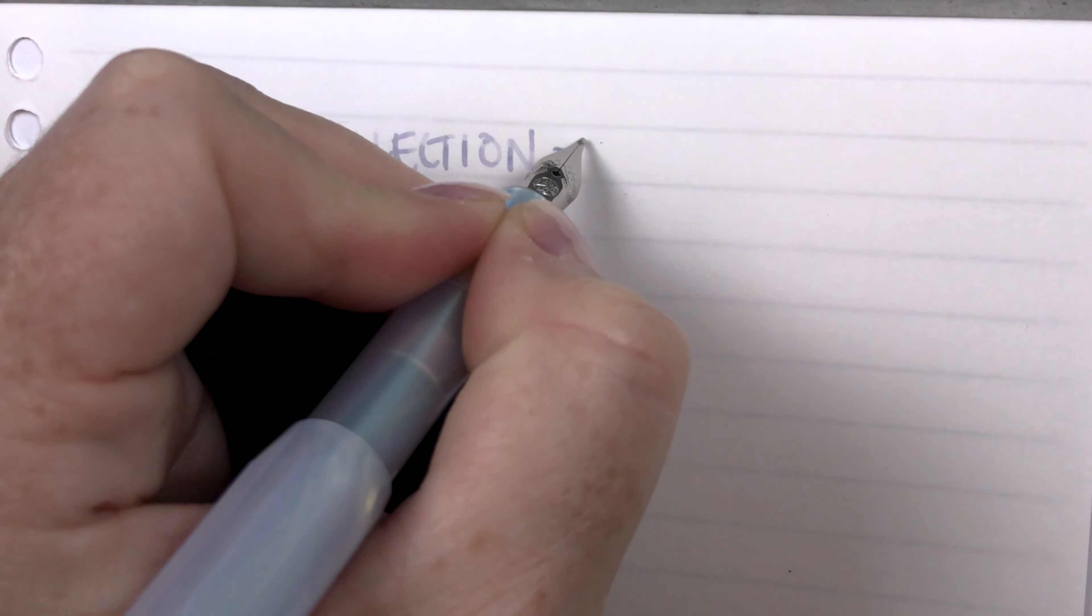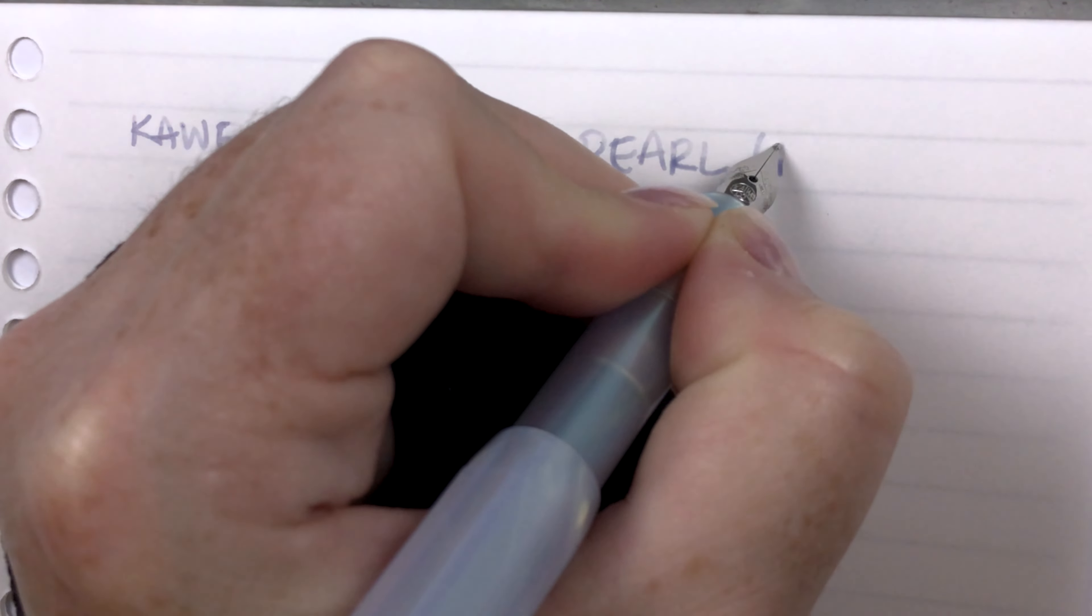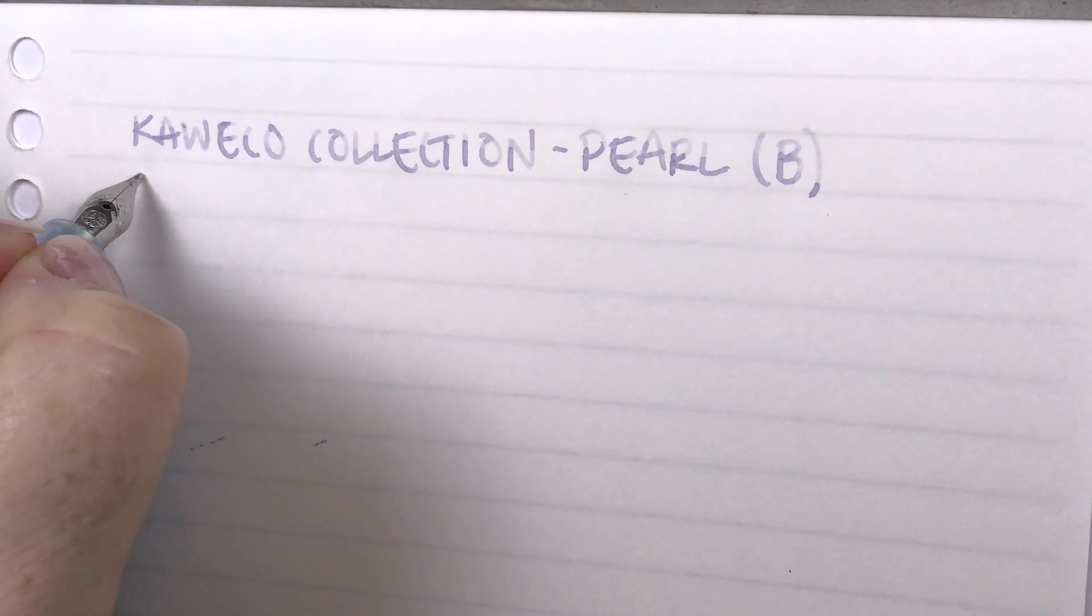So we're back and the ink is flowing well out of this pen. I think I forgot to mention that it is actually a broad nib on this Kaweco Sport and the paper that we're writing on is the Kokuyo Campus Sarasara and this is a beautiful paper to work with. It really shows shading really well so it's perfect for these Pennonia inks.